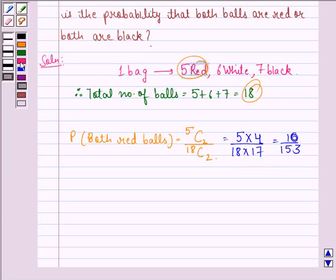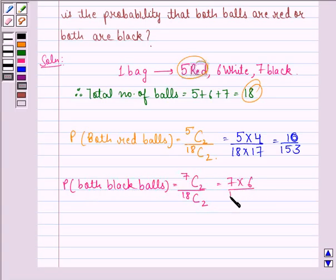Now probability that both are black balls is equal to 7C2 divided by 18C2. That is equal to 7 into 6 divided by 18 into 17. That is equal to 7 by 51.